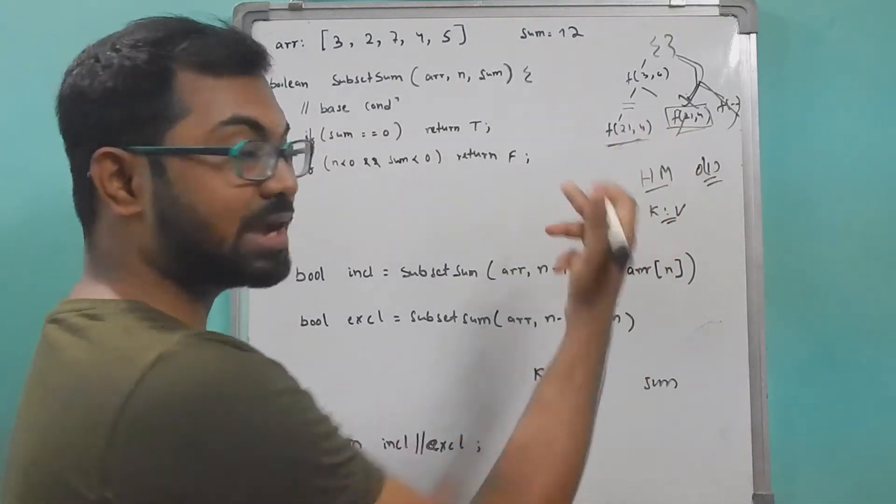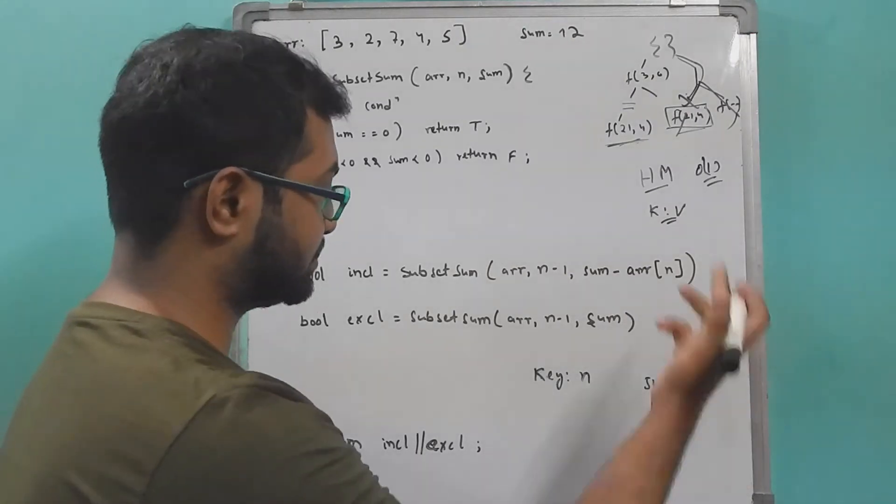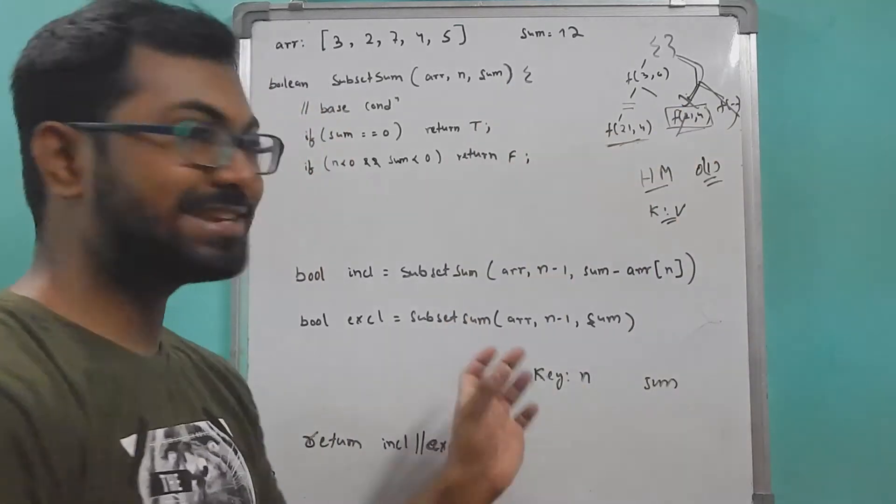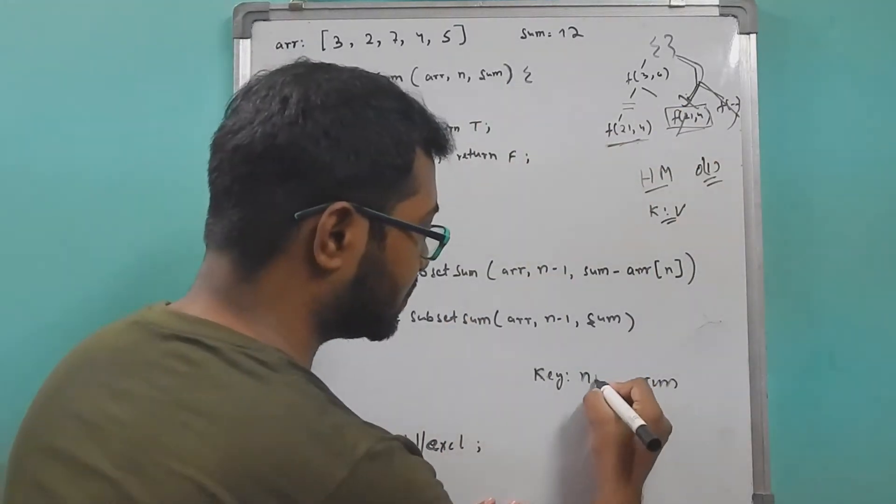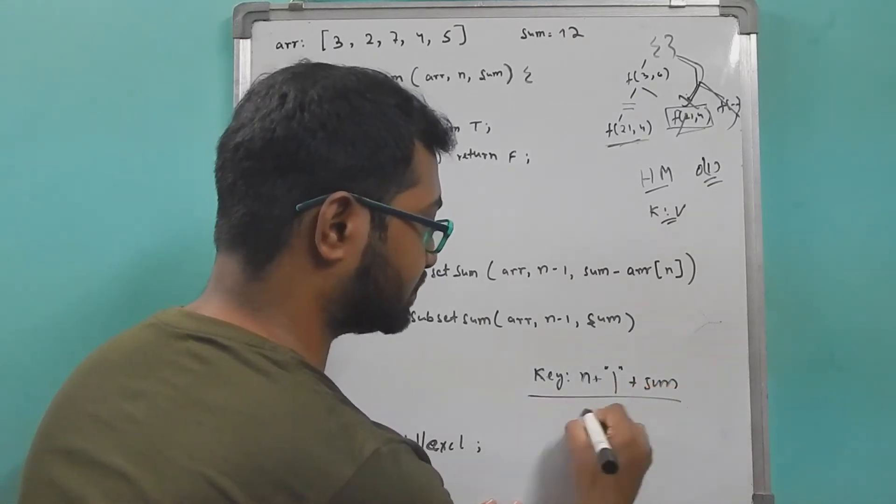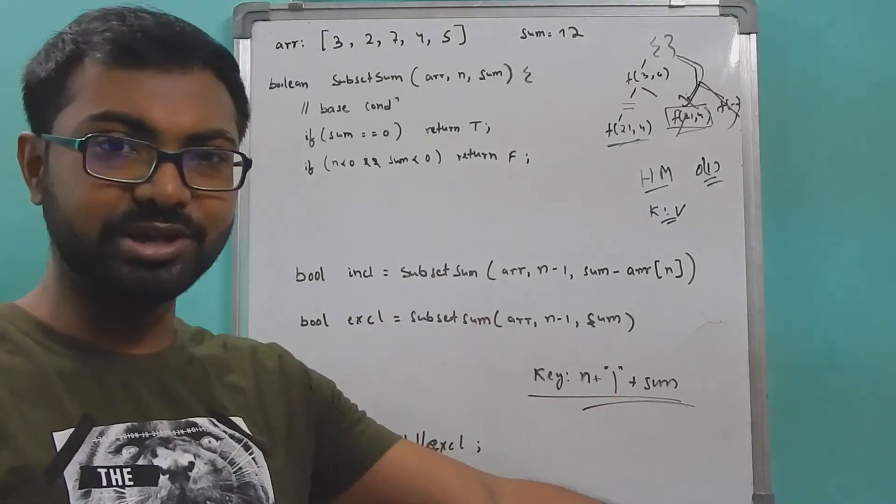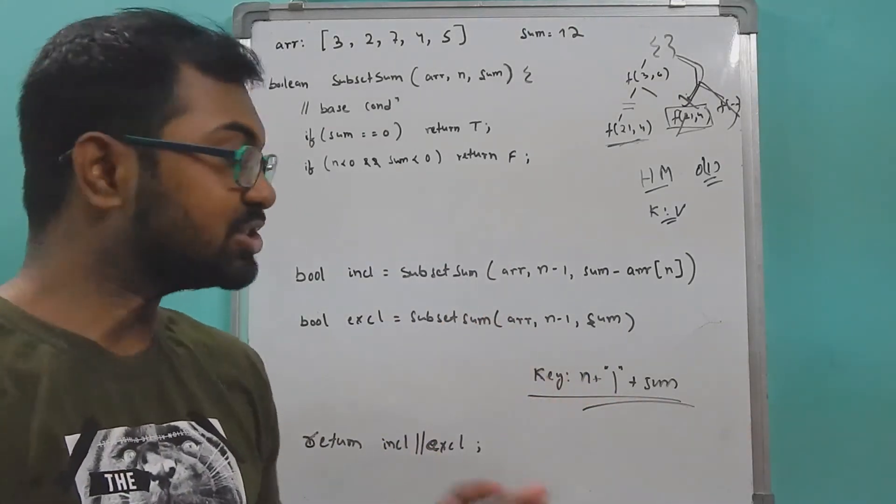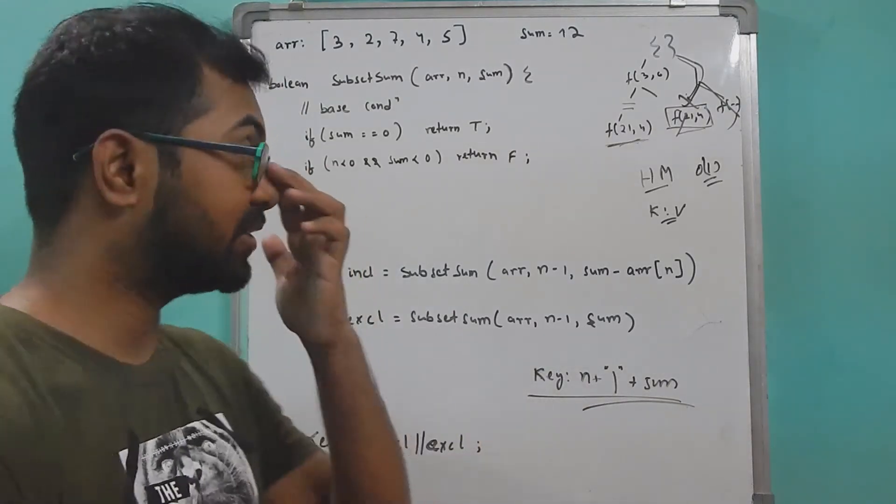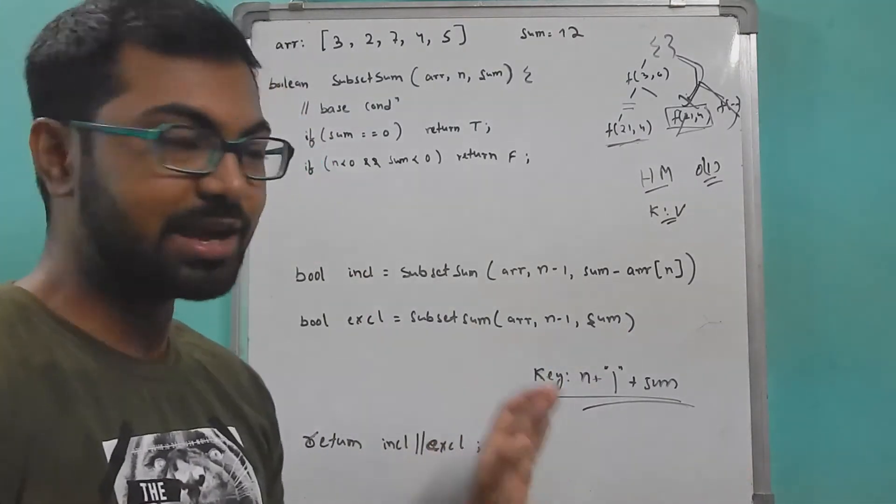Let's say our key is made up of this n, which is the index changing at every step, and the sum that is also changing at every step. So sum and index together can form a key. You can't just add it because other combinations will give the same result, so let's take it as a string. There is nothing wrong or right about it - you can have any other symbol or your own unique key, but that key should be made up of n and the sum.